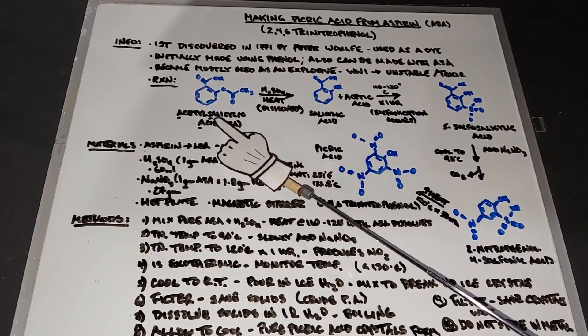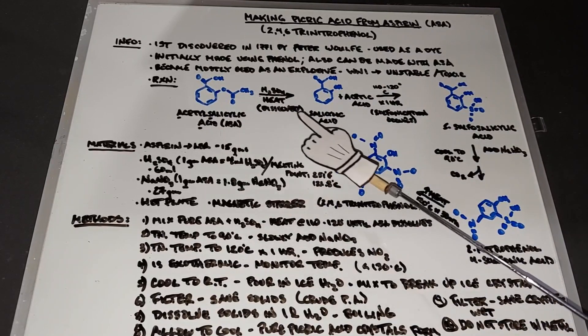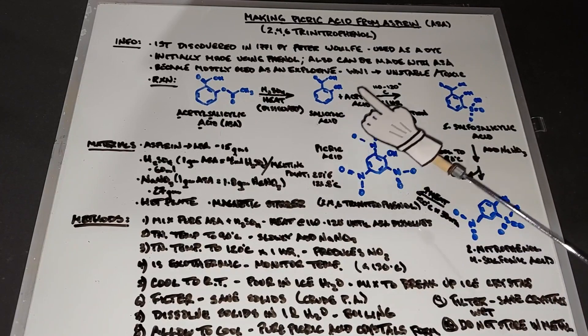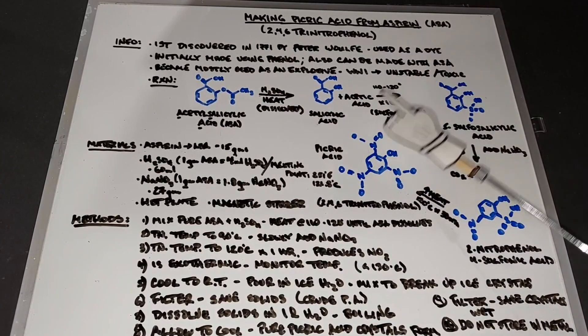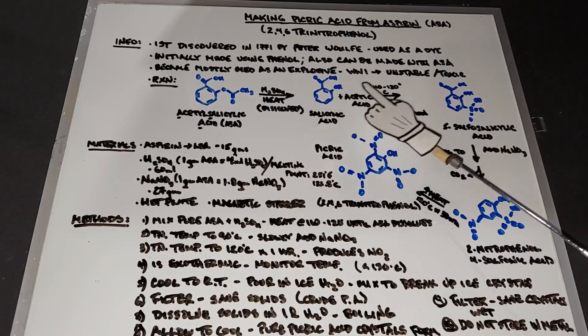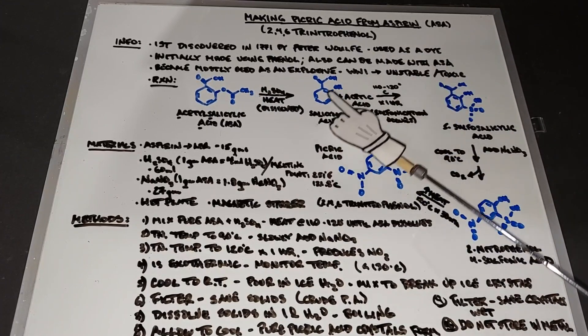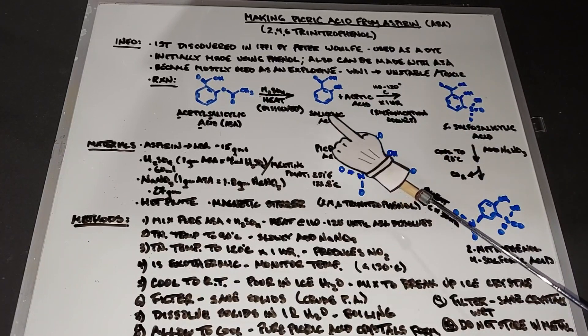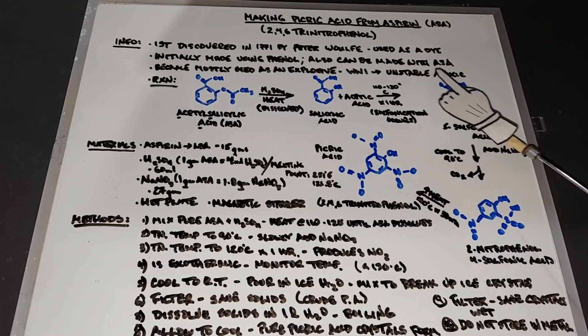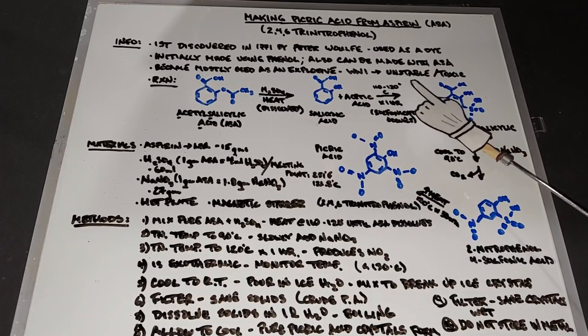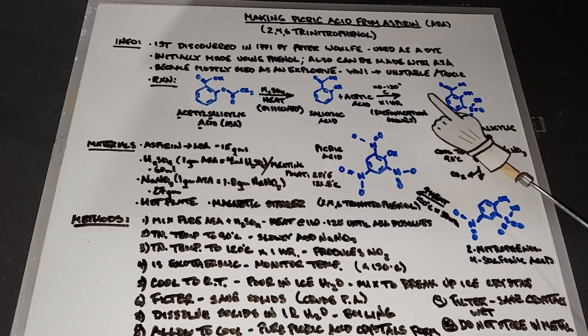So we're going to start with the acetylsalicylic acid. We're going to add some sulfuric acid and heat it, which will give us salicylic acid plus acetic acid. The acetic acid eventually is left in solution or is evaporated. The salicylic acid is then heated for an hour at about 120 degrees Celsius.